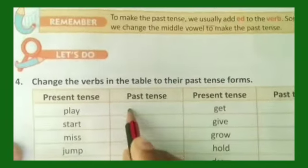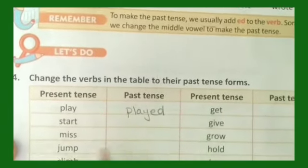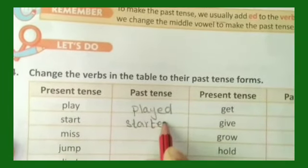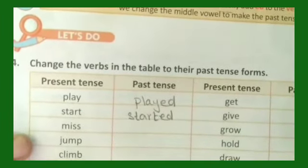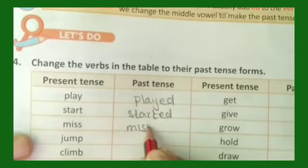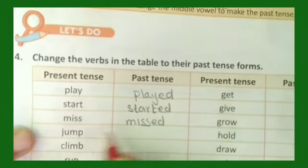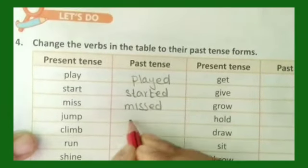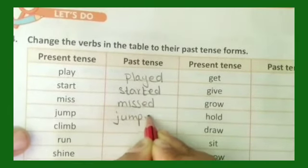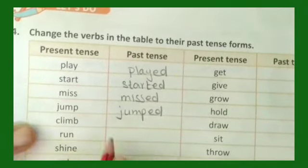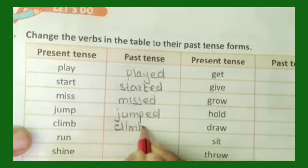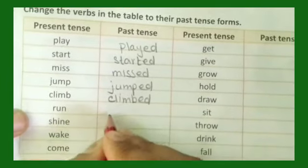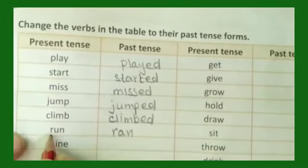Now let's change the verbs in the table to their past tense form. 'Play' — past tense is 'played.' 'Start' — 'started.' 'Miss' — 'missed.' To all these words we have just added -ed and that forms the past tense. 'Jump' — 'jumped.' 'Climb' — 'climbed.' 'Run' — 'ran'; the inside vowel is changed.